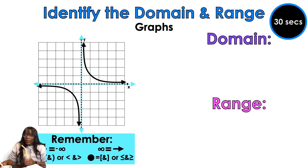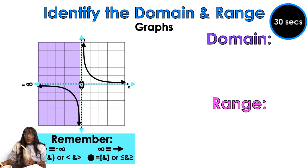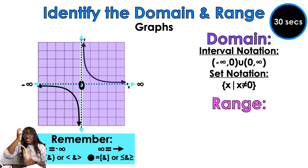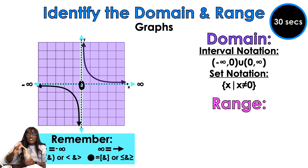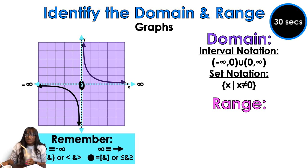Okay so this one was hard. Basically one of my boundaries is going to go from negative infinity all the way to zero, and then my other boundary starts at the asymptote and goes all the way to infinity. So we have two separate domain values: negative infinity to zero in union with zero to infinity. Why does zero not get a bracket? Because the asymptote is at zero — the lines approach zero but never actually touch it. It's like an open circle. So the asymptote value always gets a parenthesis. In set notation: x cannot equal zero.